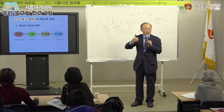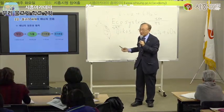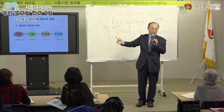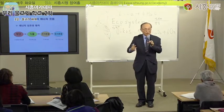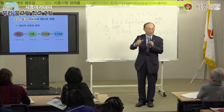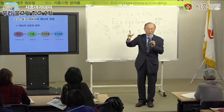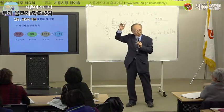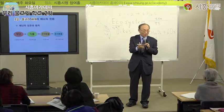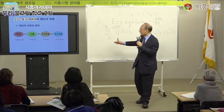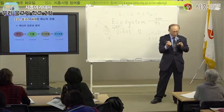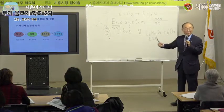콩 종류에 단백질이 많은 이유는, 대기 중의 질소를 이용할 수 있어서 비료를 안 줘도 잘 자라기 때문입니다. 모래가 많은 땅에 심어놓으면 잘 되는데, 공기가 잘 통해 질소를 잘 흡수하기 때문입니다. 이렇게 탄수화물, 지방, 단백질이 식물체에서 만들어집니다. 우리가 식물을 먹을 때 탄수화물도, 지방도, 단백질도 있는데 바로 이렇게 만들어지는 것입니다.